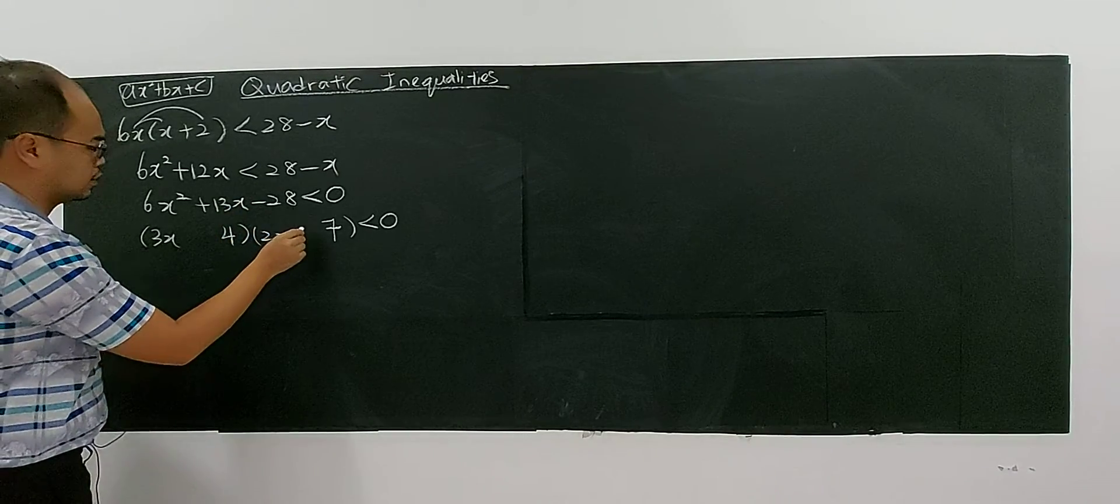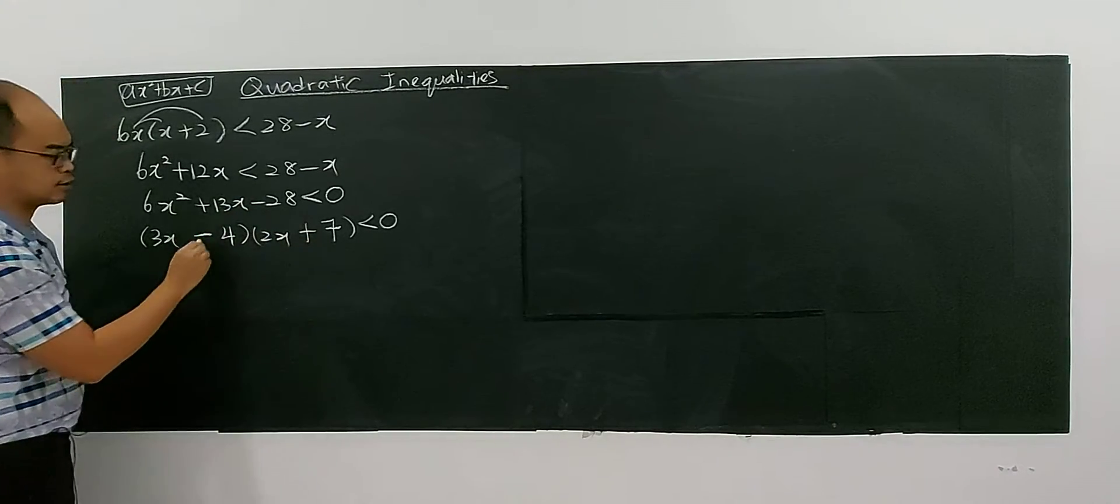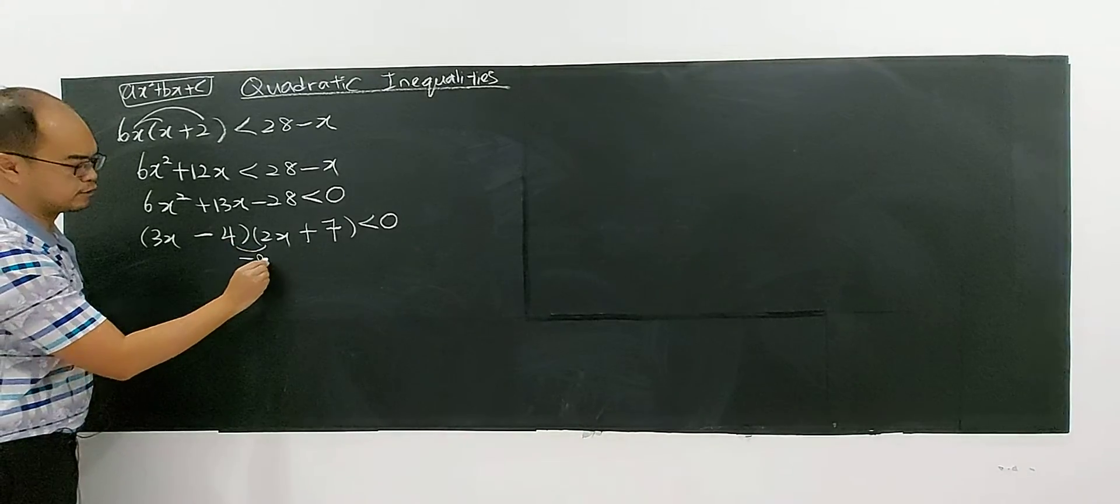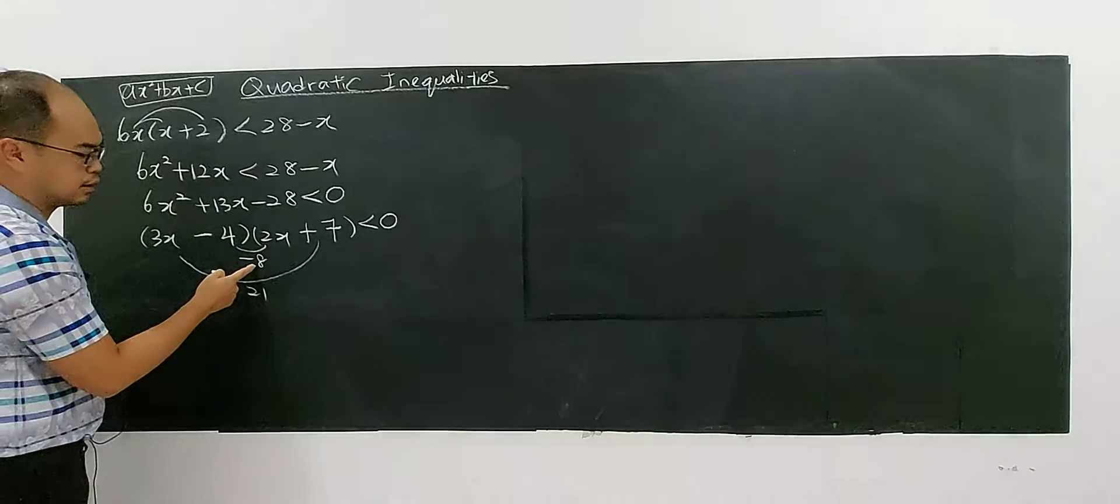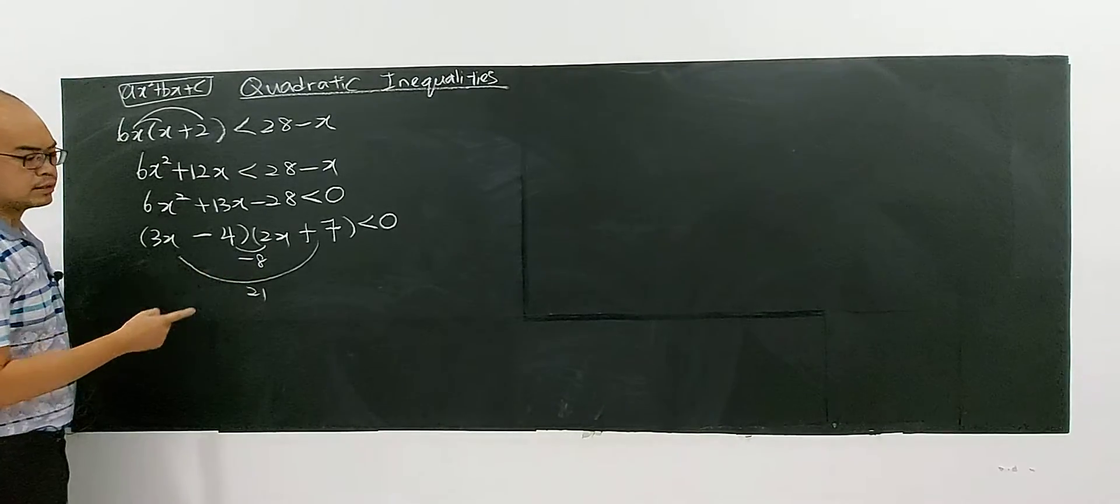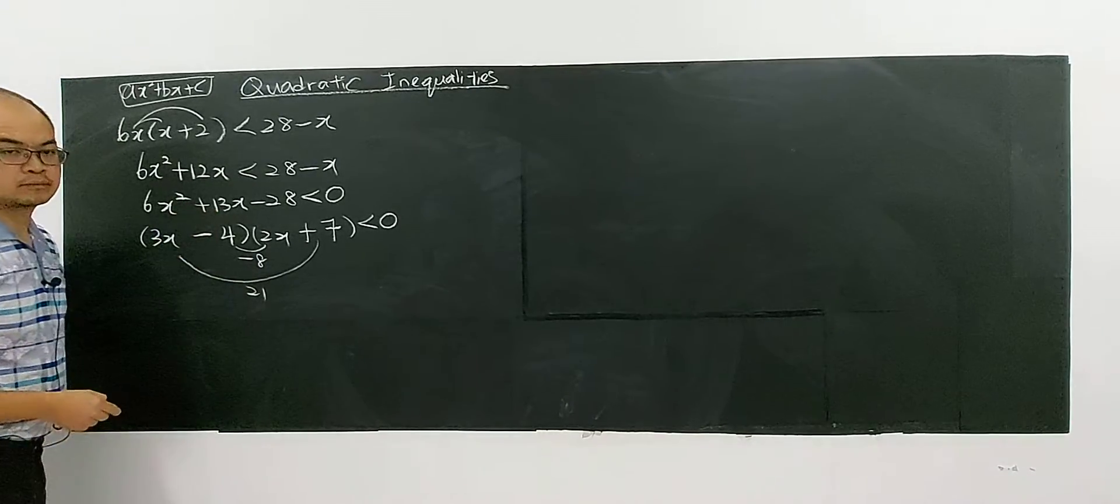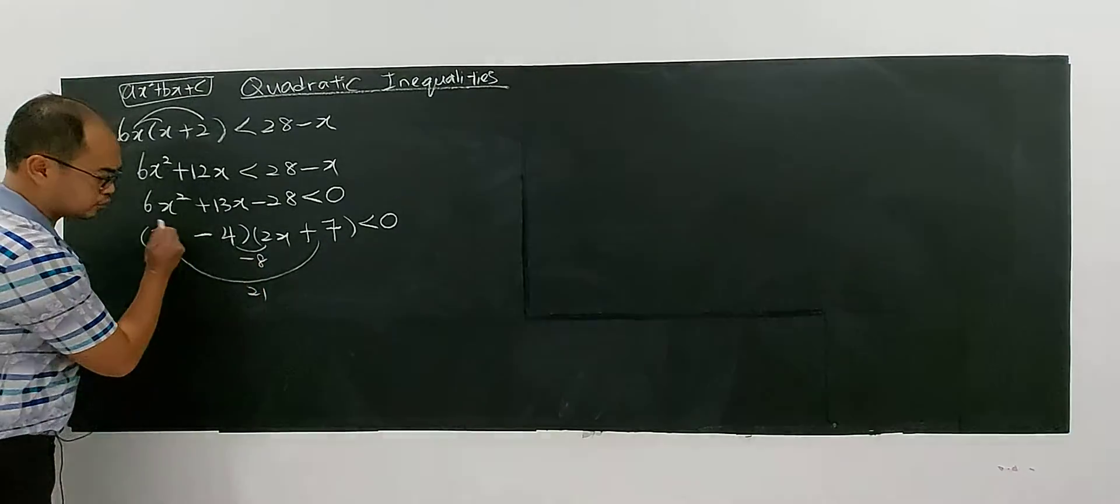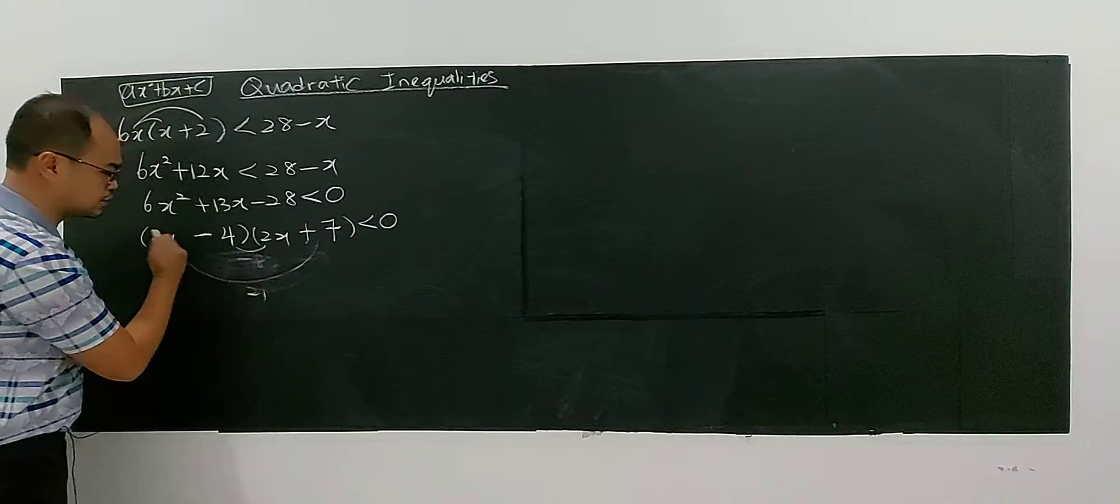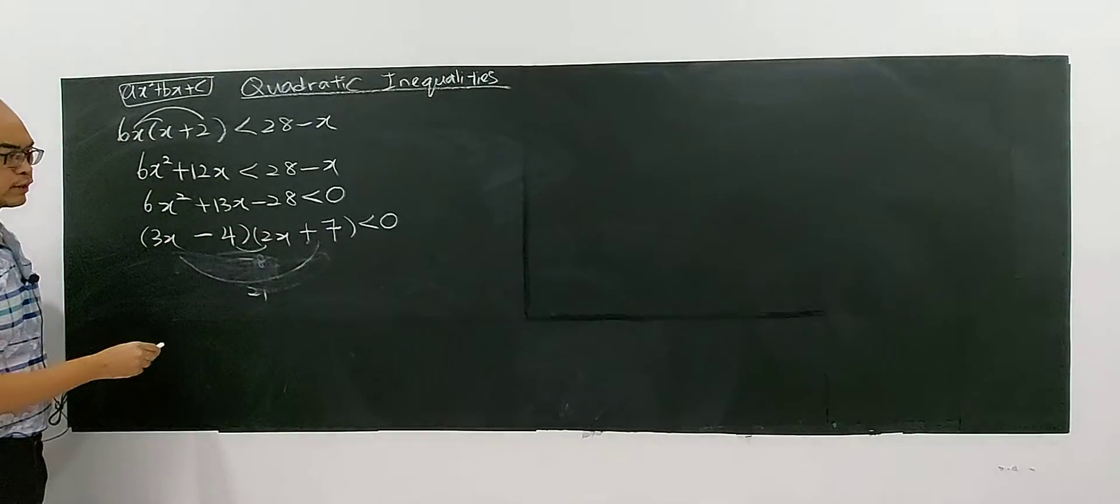Let's try with this positive and this one negative. This one you have negative 8 and this one you have 21. As 21 minus 8, you have 13. So that means your factorization is correct. This is your factorization.